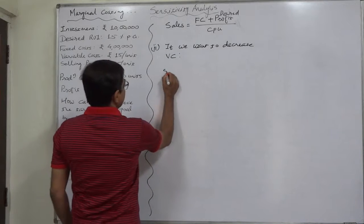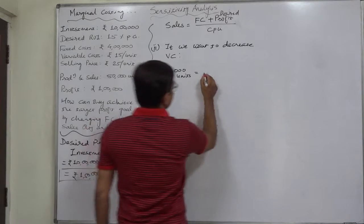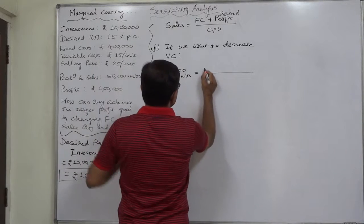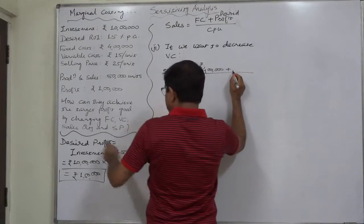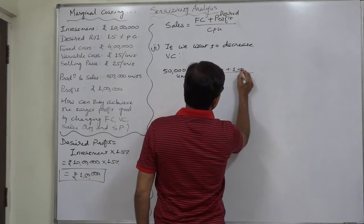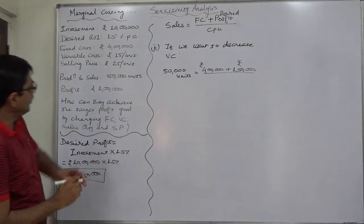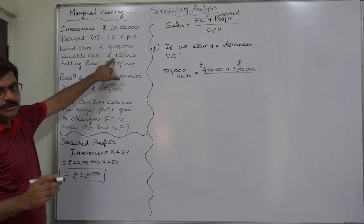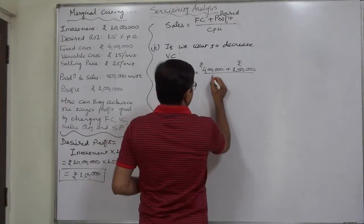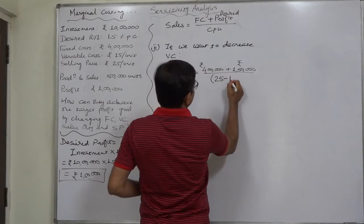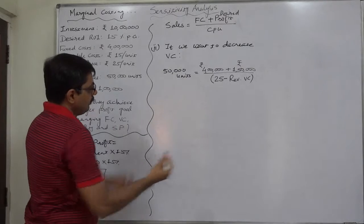The sales quantity remains as it is, 50,000 units. The fixed cost remains as it is, ₹4 lakh. Profit desired is ₹1,50,000. But if there will be change in the variable cost, the contribution per unit must change. So contribution will be unchanged: selling price of 25 minus the revised variable cost.